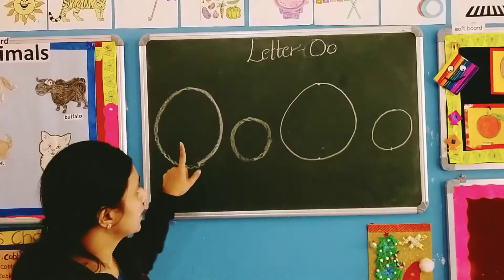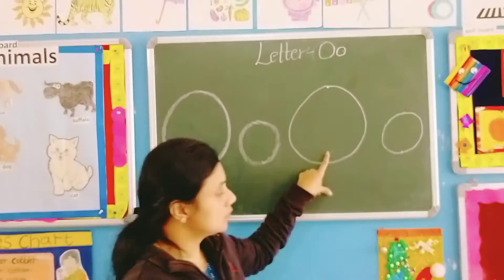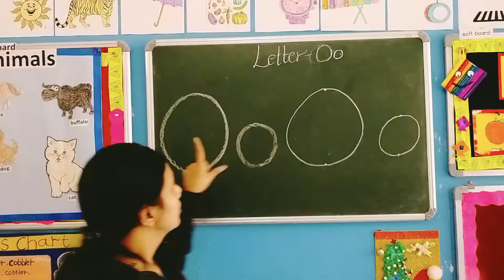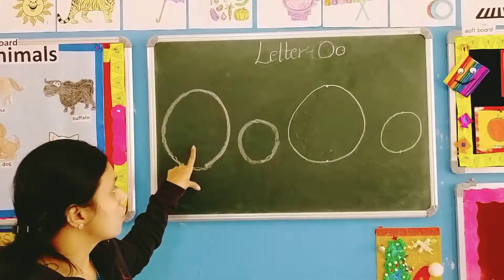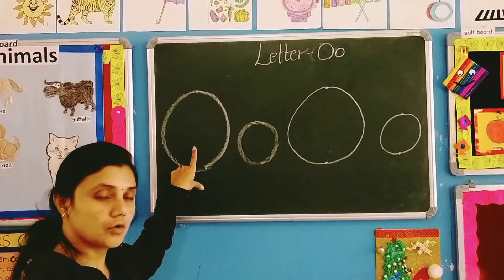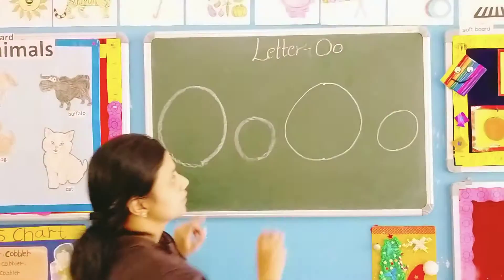See, isn't it so easy? Right? Capital O, small O. Capital O, small O. O say O. O for owl, O for ostrich, O for orange.